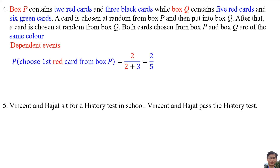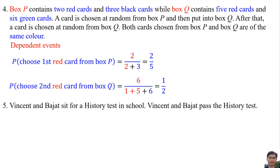Why? The probability of choosing the first red card from Box B is 2 over (2 + 3), which equals 2 over 5. Here, 2 + 3 means 2 red cards and 3 black cards, and the 2 in the numerator means 2 red cards. After choosing the first red card from Box B, the red card is put into Box Q. Box Q originally has 5 red cards.